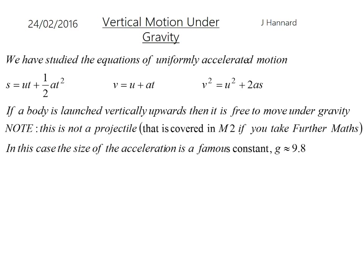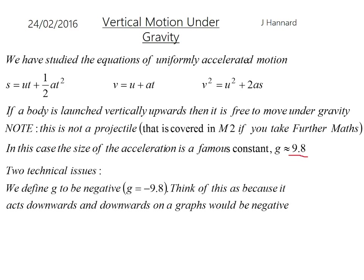So in this case, the size of the acceleration is a famous constant which we call g, g for gravity, and that equals around about 9.8 metres per second squared. But we talk about g being negative in maths because gravity acts downwards, and downwards on a graph would be negative, so we call it negative 9.8. So that's something to remember. Physicists tend to like to change it depending on the question, whether you're going up or down, but always keep it as negative.